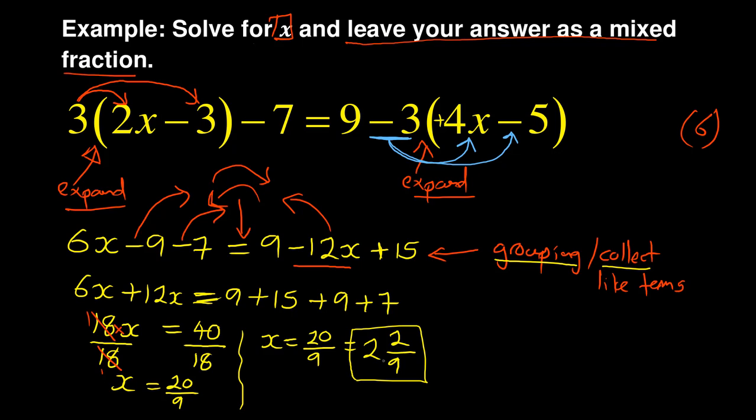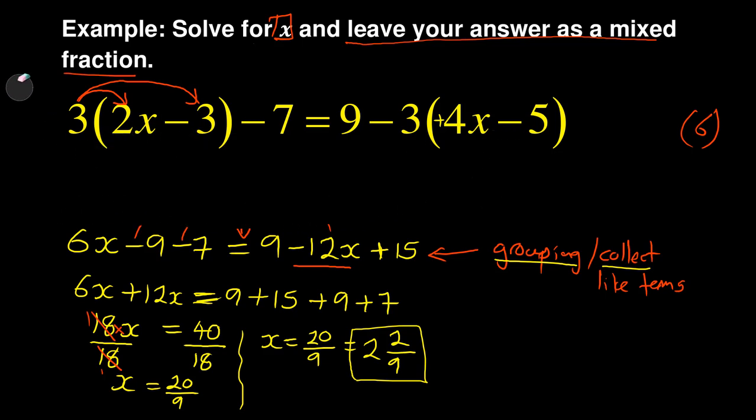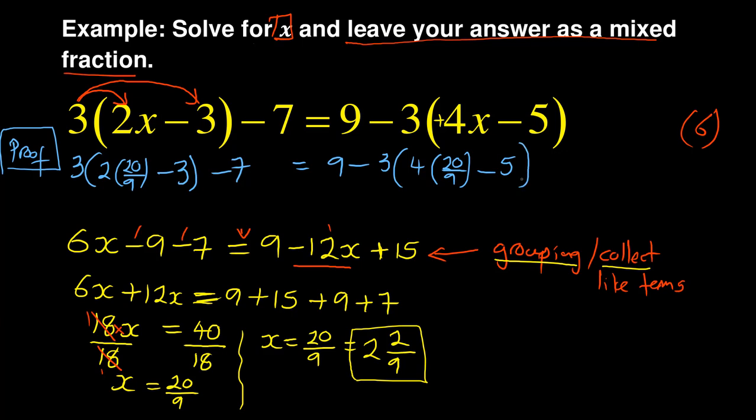Now, when you've got your answer, you can prove your answer. How do you prove your answer? In this case, I'll call this my proof. Now in my proof, what I do is I take the value of x. Remember the original value that is easier with the calculator is 20 over 9. So I'm going to say 3 into 2, my x is 20 over 9, which is same as 2 and 2 over 9. But let me just use the improper fraction version minus 3 minus 7 is equal to 9 minus 3. And then I've got 4 bracket 20 over 9 minus 5 and then I close the bracket.